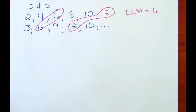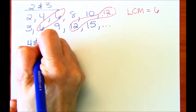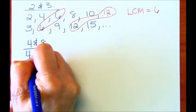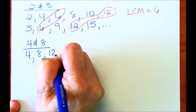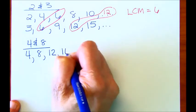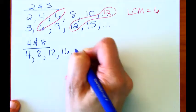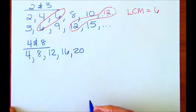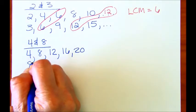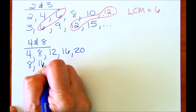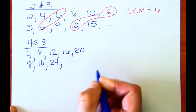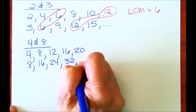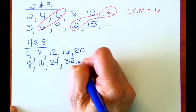Let's do a couple more examples. Let's say we have four and eight. So four times one is four. Four times two is eight. Four times three is 12. Four times four is 16. And four times five is 20. Now I'm going to do eights. Eight times one is eight. Eight times two is 16. Eight times three is 24. Eight times four is 32. And eight times five is 40.